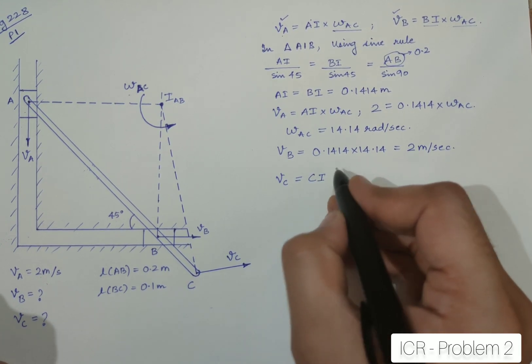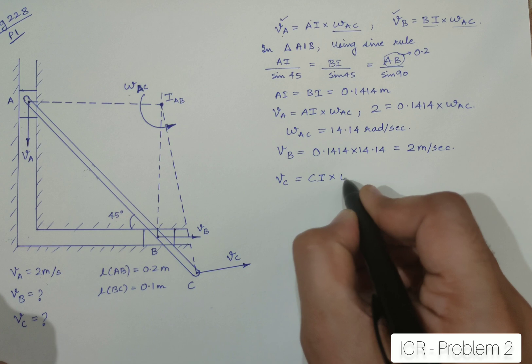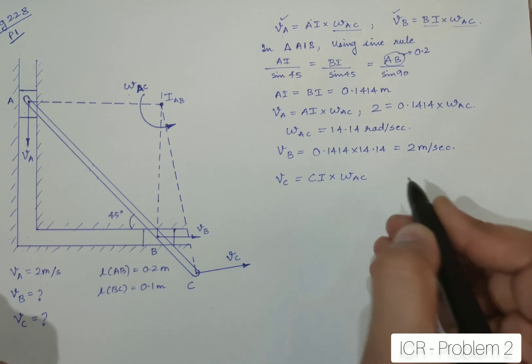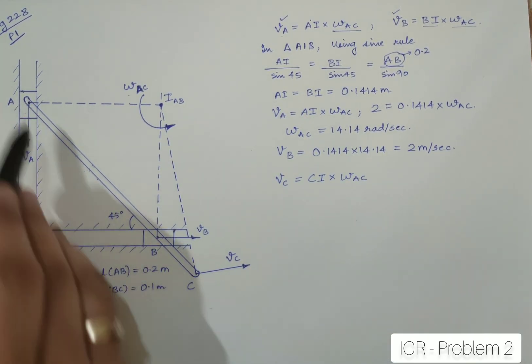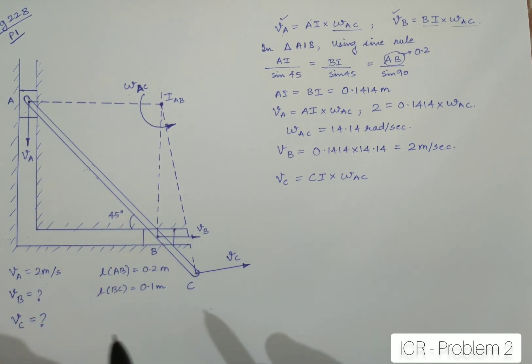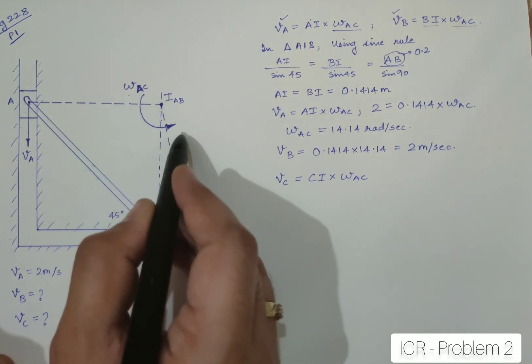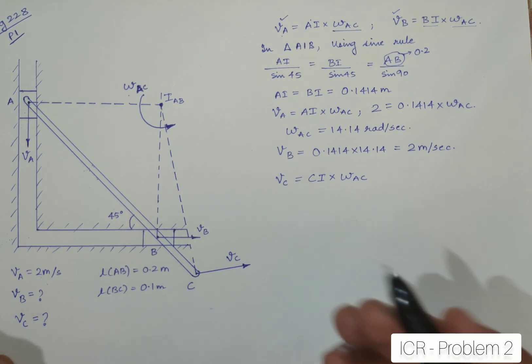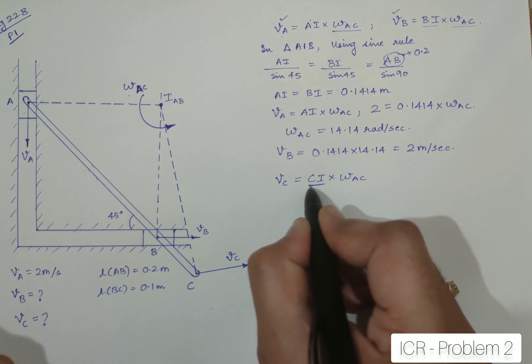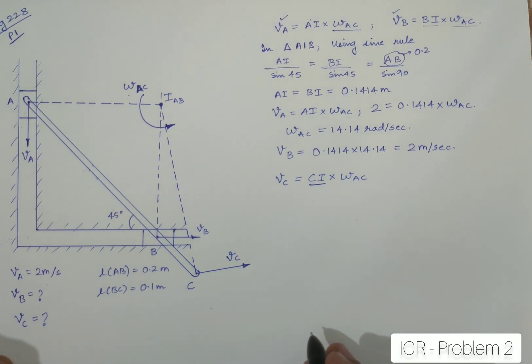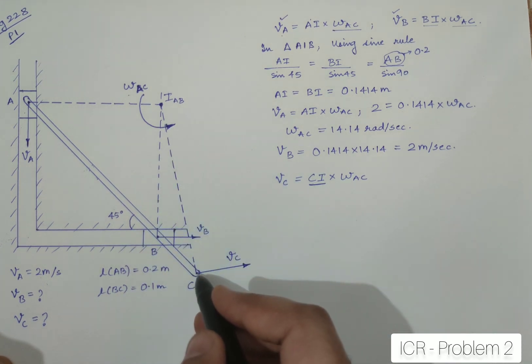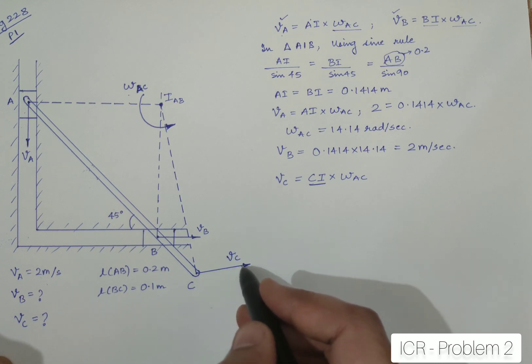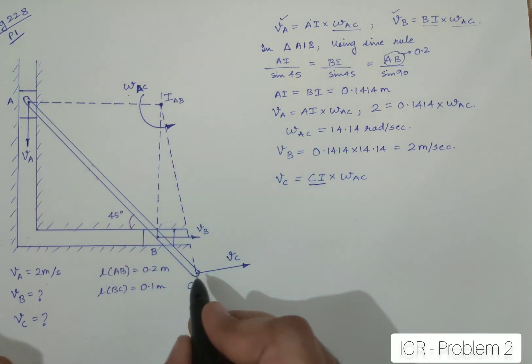All I have to do is I can just write VC over here is equal to CI into omega AC. Why omega AC? Because AC or AB they are the same link, so if you find out omega AC it's just the same particular angular velocity required for my linear velocity, but the problem is with CI. I don't know what is CI. So for finding out CI I need to have some data with which I can actually get the length of CI and then substitute it for finding out BC. So let us focus on the triangle BCI.